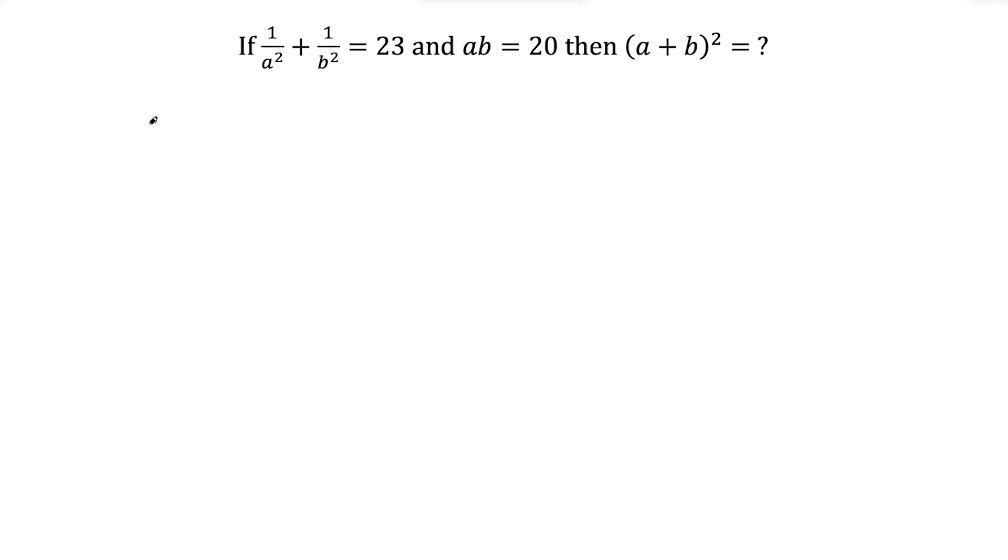What's up? I'm Vin and I'm solving this system of equations. So we have 1 over a squared plus 1 over b squared equals 23. And then we have a times b equals 20. And we have to use these two equations to find the value of a plus b squared.